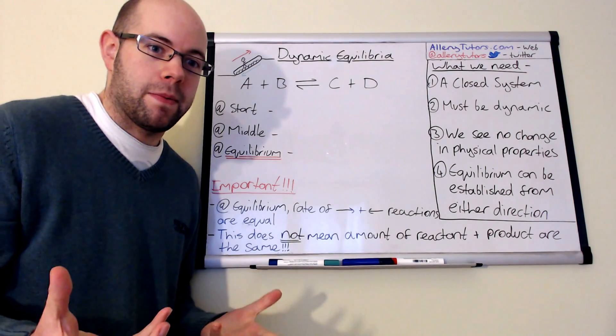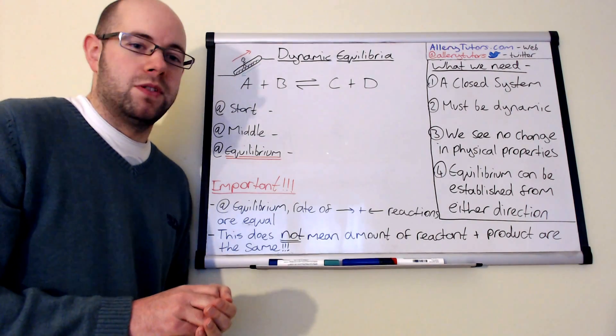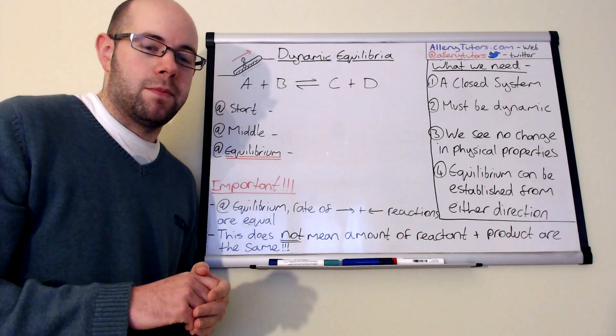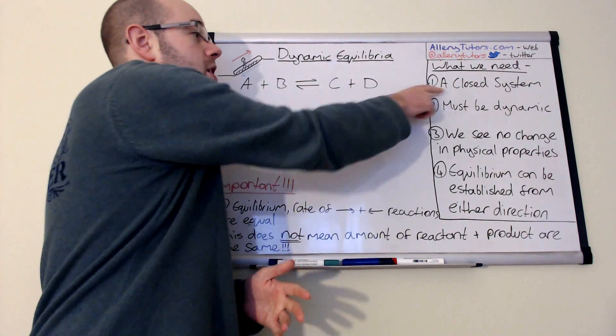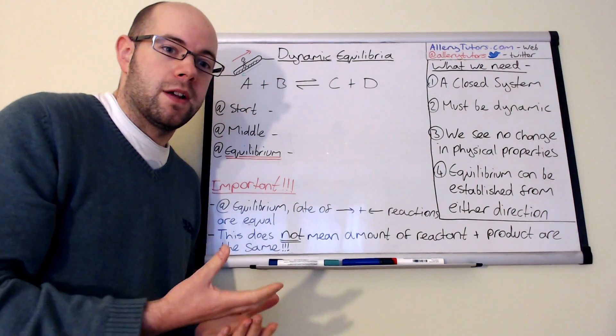for example through evaporation, then you effectively don't have a closed system and equilibrium will not be established. So that is a really key point that you need to know that it must be a closed system.